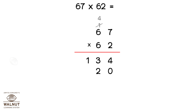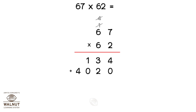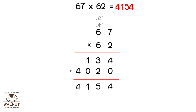Since there are no more digits to multiply, we write 40 below the line. Since we have already added the 4, we strike it out. Then we add the 2 products and get the final answer, which is 4154.